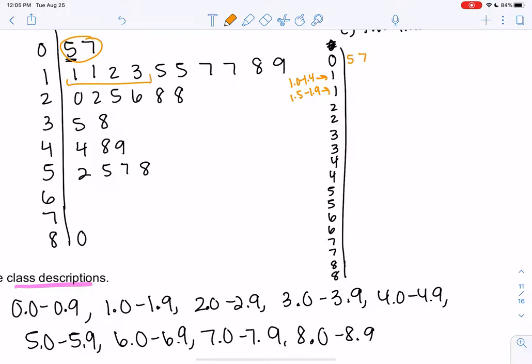So 0 would get 5 and 7. And then 1, we're cutting in half, 0 through 4 and then 5 through 9. So 1, 1, 2, 3, and then 5, 5, 7, 7, 8, 9. So sometimes people just prefer the data more spread out. So the 2s again, cut off 0 through 4, 5 through 9. If you're feeling confident, keep going without me.